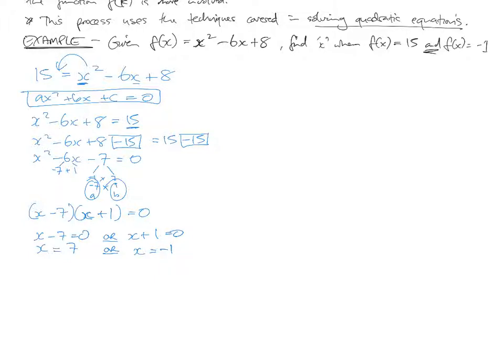So, if the function of x equals 15, given this function of squaring the input, then taking 6 times it, and then adding the number 8 to the result, x can either be 7, or it can be negative 1 as a solution to this. Alright, so hopefully you can see that that's an application of stuff that we've already done. If you don't remember that, well, look through your book again.